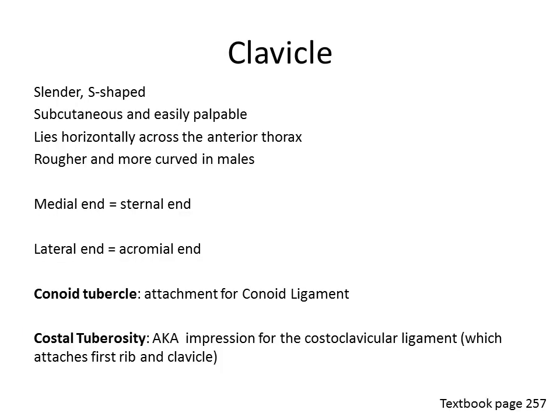Going into more depth about the clavicle: it is a slender, S-shaped bone. It is subcutaneous, meaning it's right below the skin and therefore easily palpable. The clavicle lies horizontally across the anterior thorax and in males it will be rougher and more curved. The medial end, closer to the midline, is known as the sternal end because this is where it articulates with the sternum. The lateral end, closer to its connection with the scapula, is called the acromial end.